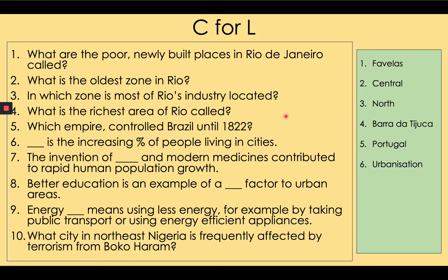Six: urbanization is the increasing percent of people living in cities. Seven: the invention of fertilizers and modern medicines contributed to rapid human population growth. Eight: better education is an example of a pull factor to urban areas. Nine: energy conservation means using less energy, for example by taking public transport or using energy efficient appliances. Ten: what city in northeast Nigeria is frequently affected by terrorism from Boko Haram? It is Maiduguri.